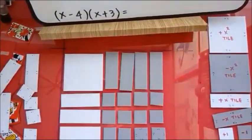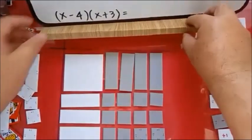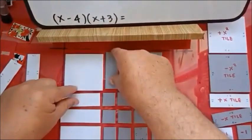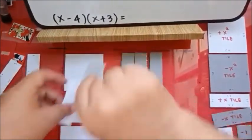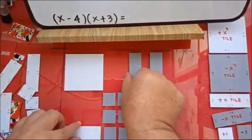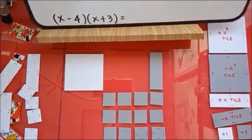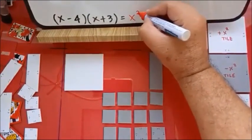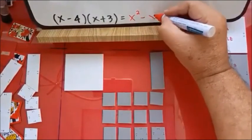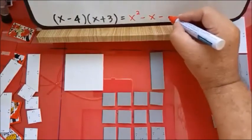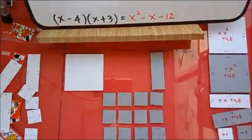So, what will we do now? We will remove the neutral pairs. This pair — one negative, one positive — remove it. One negative, one positive — remove it. One negative, one positive — remove it. Okay, nothing left to remove. So what remains? One x squared tile, one negative x tile, and 1, 2, 3, 4 — 4 times 3 is 12 — twelve negative unit tiles. So the answer is x² − x − 12.